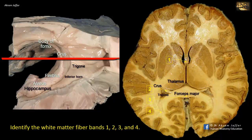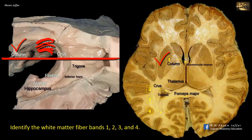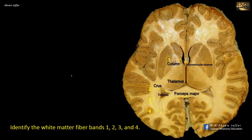This joining takes place at a higher section than this one, so we don't see the body of the fornix here. The body of the fornix then separates anteriorly into 2 columns, each of which curves downward and backwards. Thus, it can be seen again in this section in the anterior part. Note the column of the fornix in 1. The column of the fornix here forms the anterior boundary of the interventricular foramen, while the anterior end of the thalamus forms the posterior boundary.